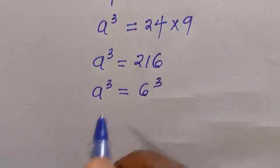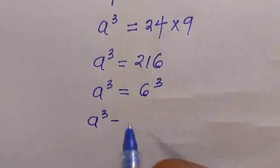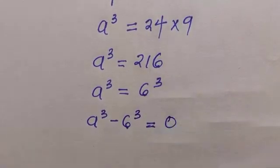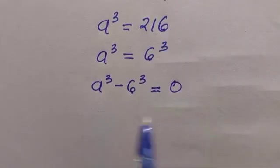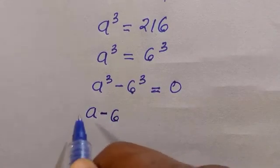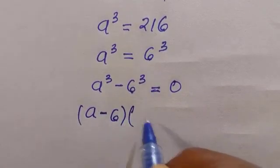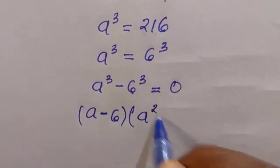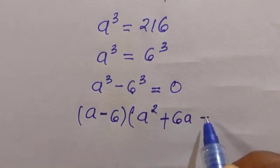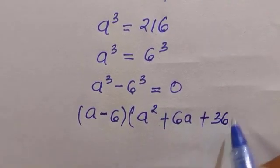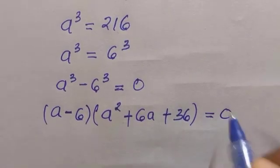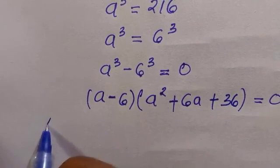All right, so what we do here is we can just cancel 3 and 3 and we have a equals 6. So let's do the basic math here. If we transfer this, we have a is the difference of two cubes where we can have a minus 6 times a raised to power 2 plus 6a plus 36 equals 0. So this is the full expansion of a³ minus 6³.